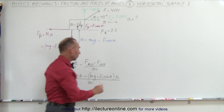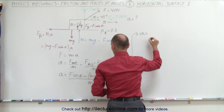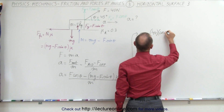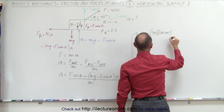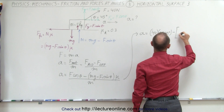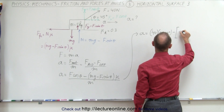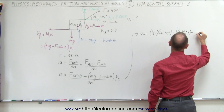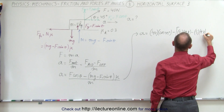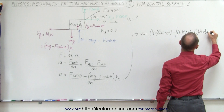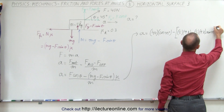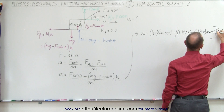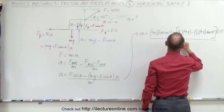Now we're ready to plug in the numbers. The acceleration is F, which is 40 newtons, times the cosine of 45 degrees, minus mg — which is 5 kilograms times 9.8 meters per second squared — minus 5 times 9.8 times the sine of 45 degrees, and the whole thing multiplied by mu which is 0.3, divided by the mass of the block which is 5 kilograms.